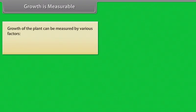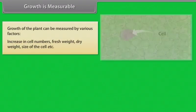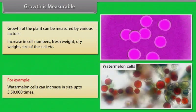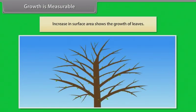Growth is measurable. Growth of the plants can be measured by various factors: increase in cell numbers, fresh weight, dry weight, size of the cell, etc. For example, watermelon cells can increase in size up to 350,000 times. Increase in surface area shows the growth of leaves.